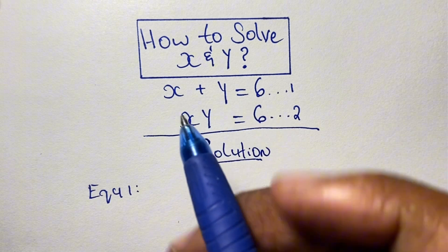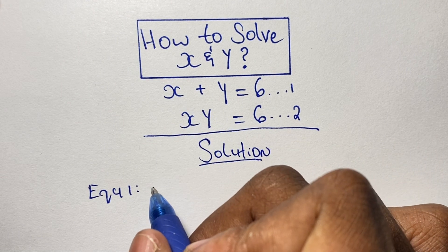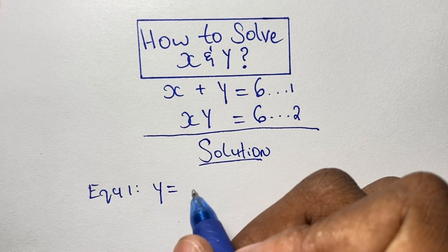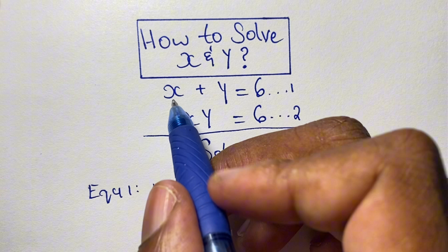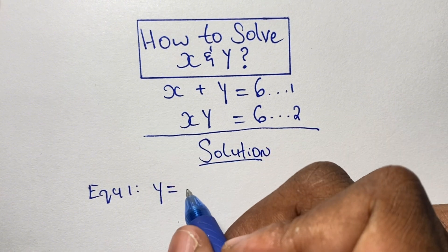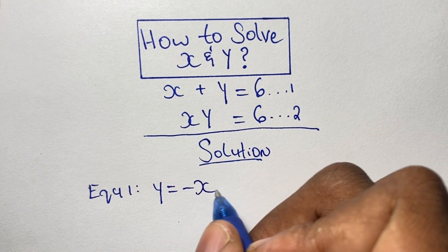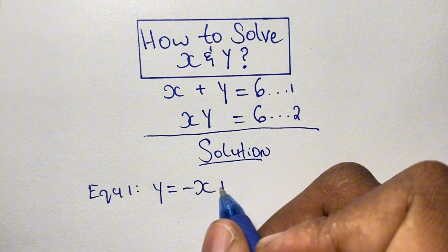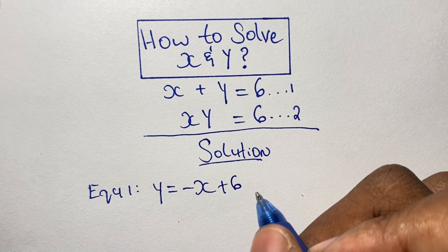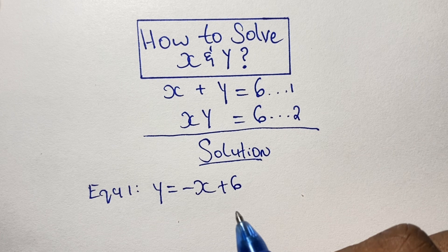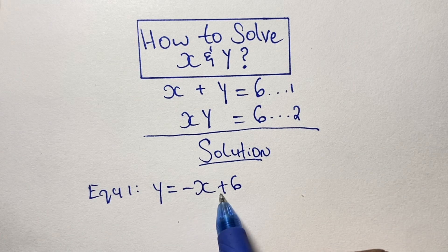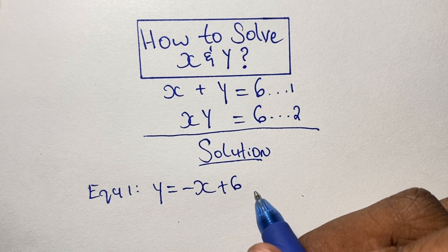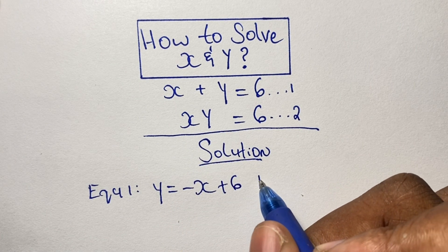You can check out my math olympiad playlist to see how to solve other simultaneous equations such as these. Alright, let's start our solutions. We start by rewriting equation 1, making y the subject, so y is equal to negative x plus 6.